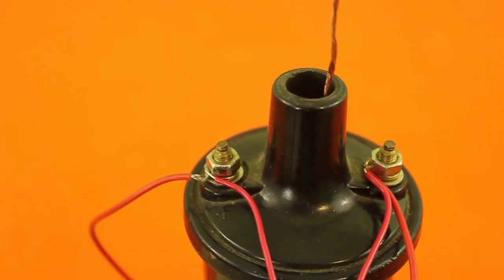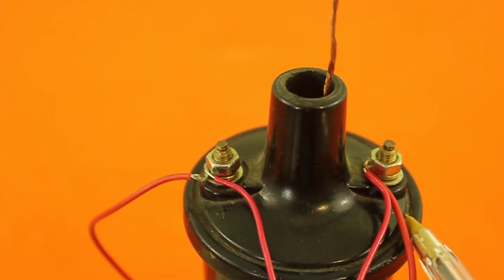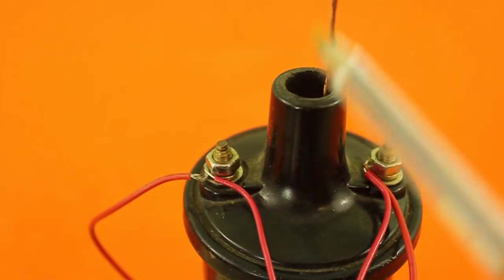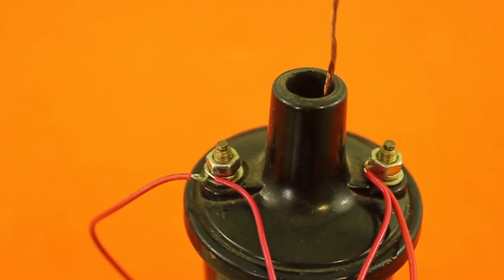This is the ignition coil. The two screws correspond to the primary of the coil and they are marked with positive and negative. This other wire that normally goes to the spark plug of the car is where we obtain the high voltage.